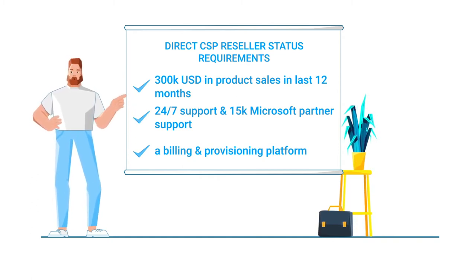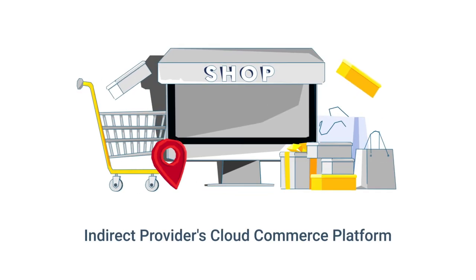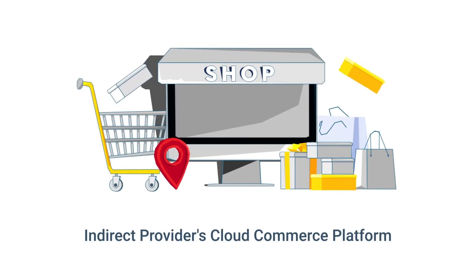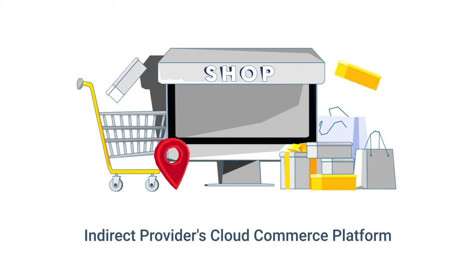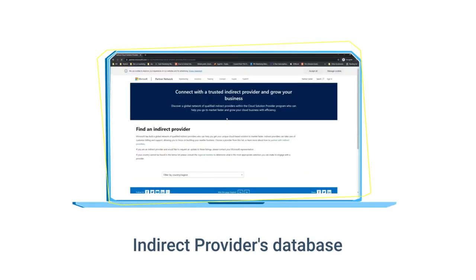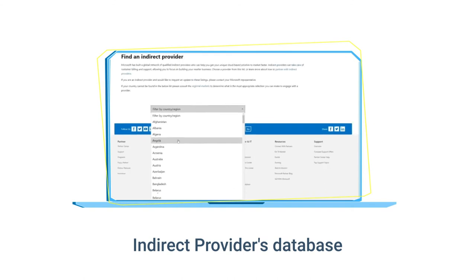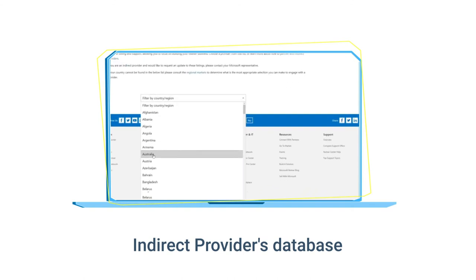In the indirect motion, indirect providers help resellers usually with support queries and make their own cloud commerce platform available to their resellers. Microsoft supports an open directory where indirect resellers can choose their indirect provider in accordance with their CSP agreement and region.